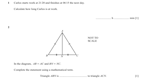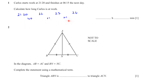Question number one: Carlos starts work at 21:20 and finishes at 6:15 the next day. Calculate how long Carlos is at work. His starting time is 21:20, and after 21:00 the next full hour is 22:00. Adding 40 minutes gives 22:00 — that's one hour — then 23:00 and 24:00. So till 12 o'clock midnight he has worked 2 hours 40 minutes.